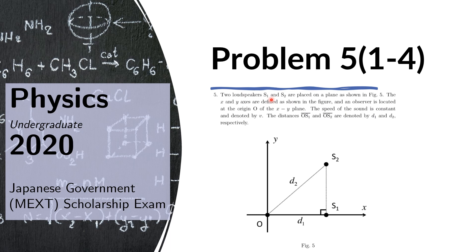Two loudspeakers, S1 and S2, are placed on a plane as shown in Figure 5. The X and Y axes are defined as shown in the figure, and an observer is located at the origin O of the XY plane. The speed of sound is constant and denoted by V. The distances OS1 and OS2 are denoted by D1 and D2, respectively.